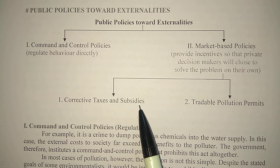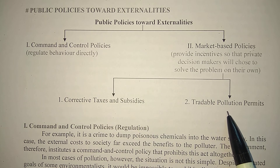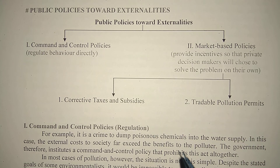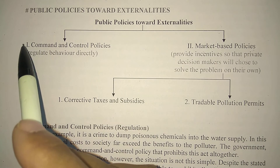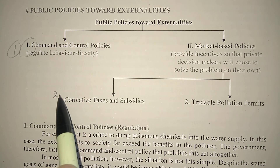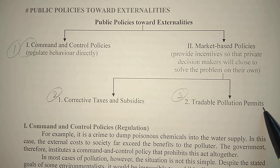Under market-based policies, the first tool is corrective taxes and subsidies, as we explained earlier with the Pigouvian tax concept in previous videos. The second tool is tradable pollution permits — a new type of market is generated where pollution permits are bought and sold. So the three points are: one, command and control policies; two, corrective taxes and subsidies; and three, tradable pollution permits.